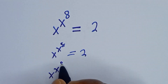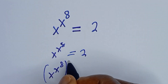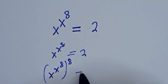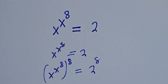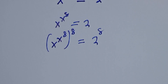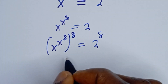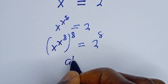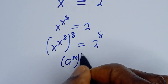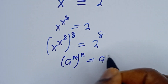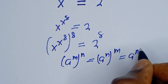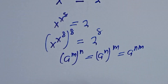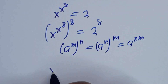This gives s to the power of s to the power of 8, all to the power of 8, is equal to 2 to the power of 8. Take note that if you have a raised to power m to the power of n, this is equal to a raised to power n to the power of m, which is equal to a raised to power n times m.